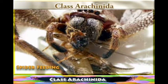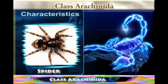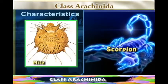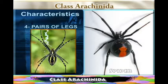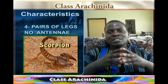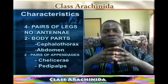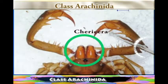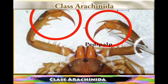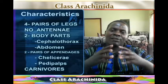To recap Class Arachnida: the spider, the scorpion, the mite, and the tick are in the same class because they all have eight legs — four pairs of legs. They have no antennae, and the body is divided into two sections: the cephalothorax and the abdomen. They have two pairs of appendages — the chelicerae and the pedipalps — and they are carnivorous animals.